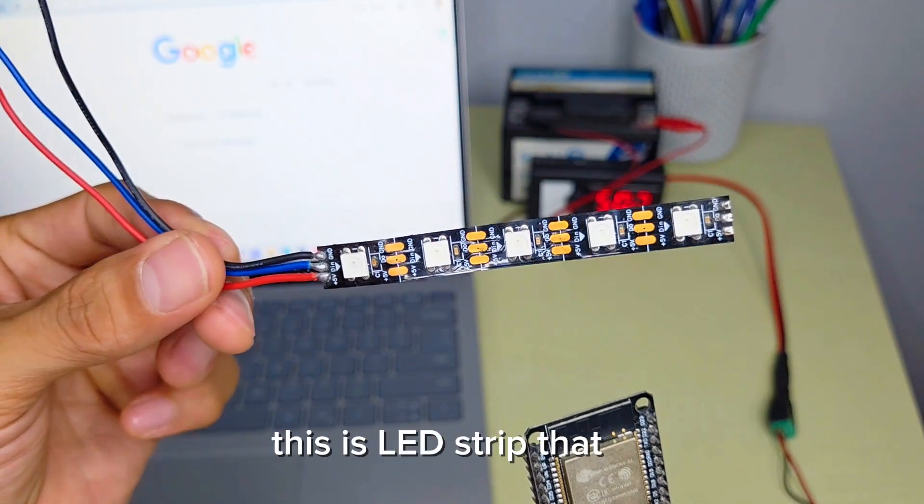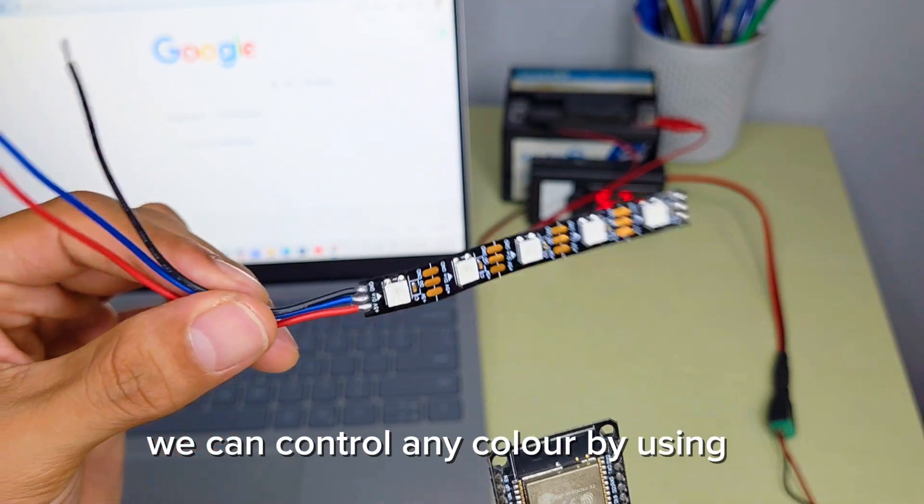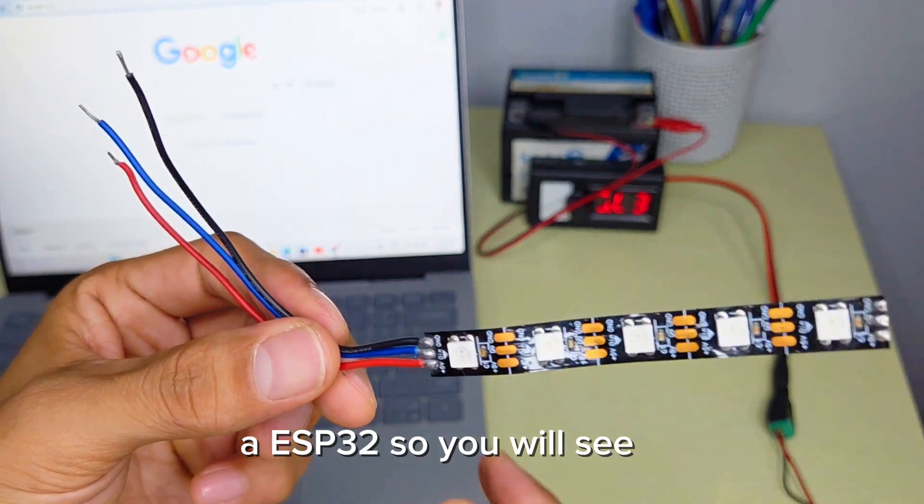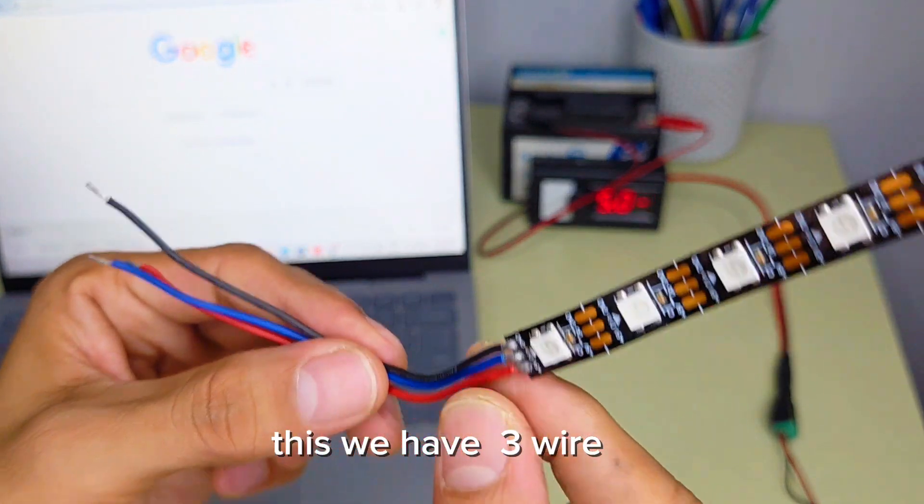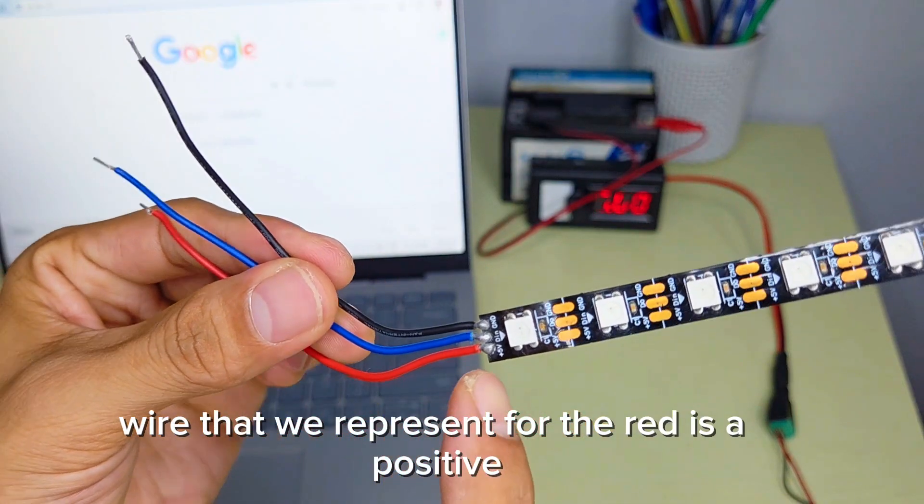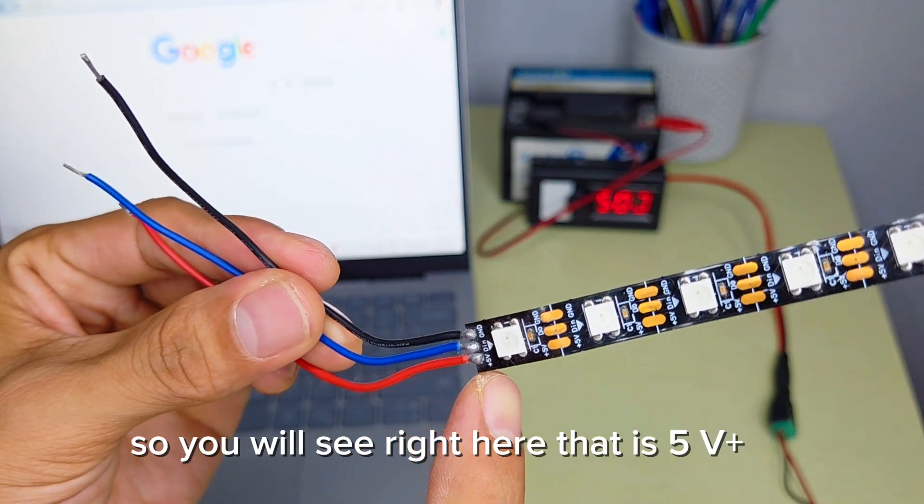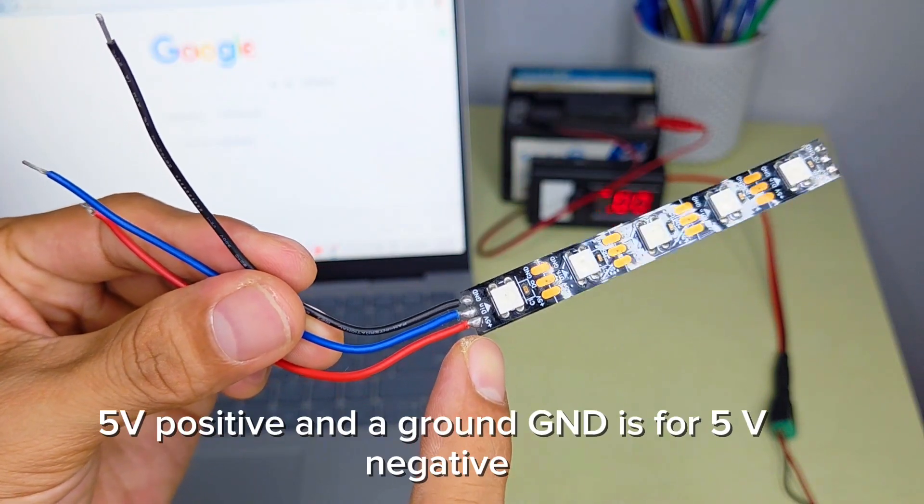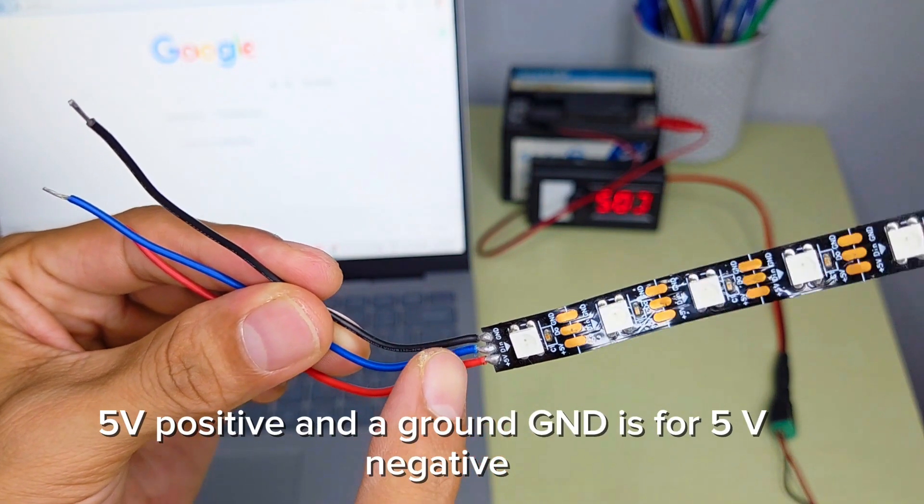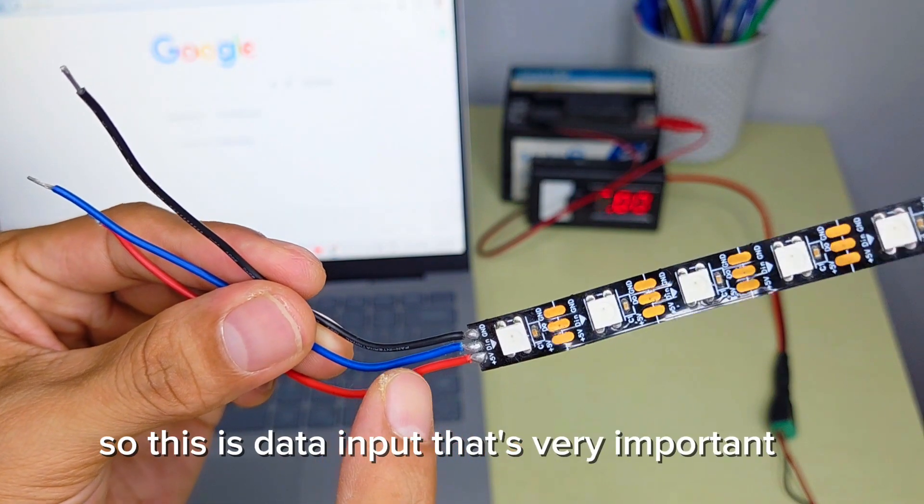This is an LED strip that we can control any color by using ESP32. We have three wires: red is positive, GND is ground or negative, and DIN is data in. This data input is very important.